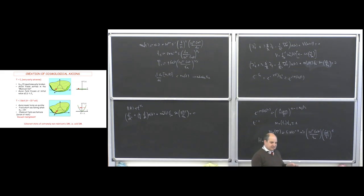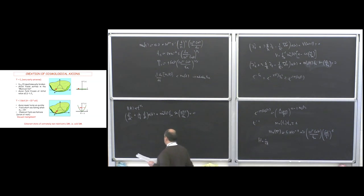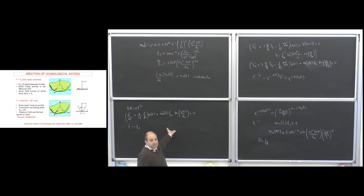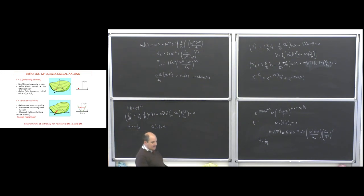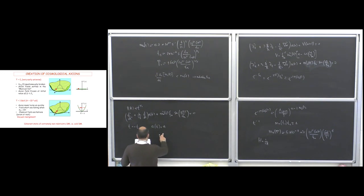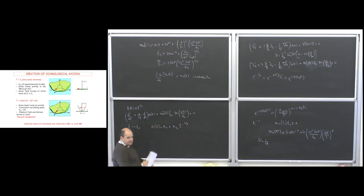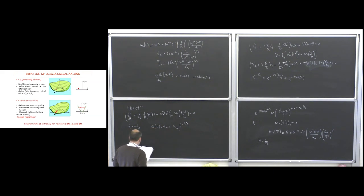Let us estimate the solution — one can solve the equation numerically for an exact solution, but we can do analytical estimations here. At times much smaller than T_1, we can neglect the mass effect since the mass switches on at T_1. Taking just this part of the equation, and since we are in the pre-inflationary scenario where the field is homogenized, the solution can be written such that for sufficiently large time, the decaying term dies away and the field approaches a constant.